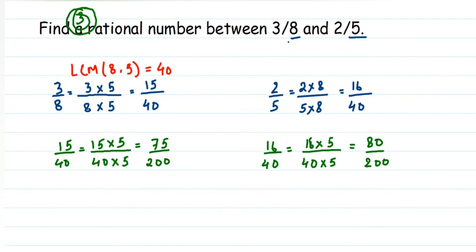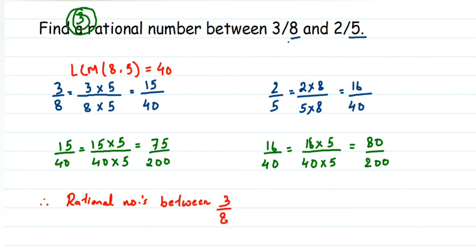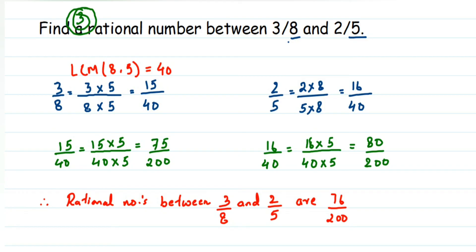So we got 75/200 and 80/200. The rational numbers between 3/8 and 2/5 are therefore: 76/200, 77/200, 78/200, and 79/200. Note that 75/200 is equivalent to 3/8, and 80/200 is equivalent to 2/5, so all these equivalent forms are equal rational numbers.